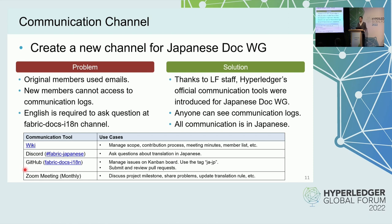After starting the team, we had a communication problem. Original members used email to connect, so communication was closed and new members could not access communication logs. Another problem was that English was required to ask questions at the Fabric documentation channel — another communication barrier. To solve this, we asked staff to create a new channel for the Japanese documentation working group. Now we have Wiki, Discord, GitHub, and Zoom for the Japanese working group, so we communicate in Japanese and everyone can see the communication logs.